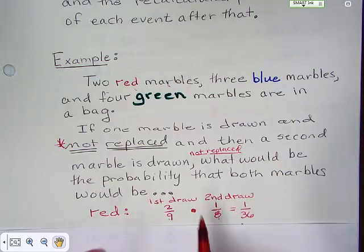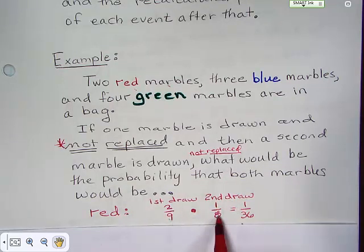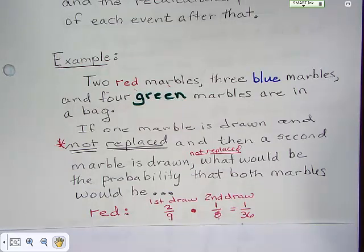So, then it says up here that we have to multiply. So, we take two times one is two. Nine times eight is 72. When you reduce that, it's one over 36. And that is the dependent probability of drawing two red marbles in a row out of the same bag without replacement.